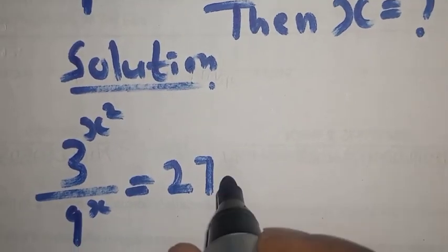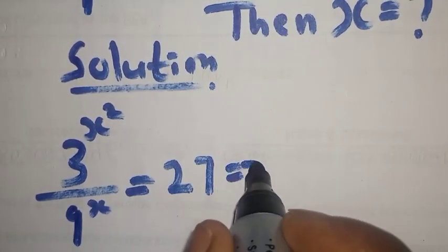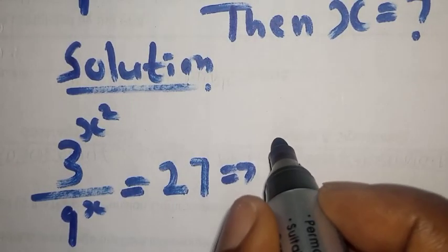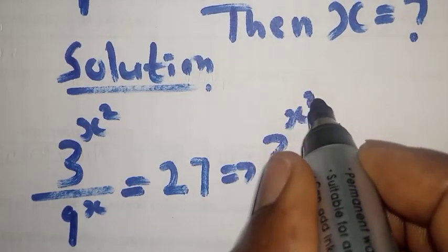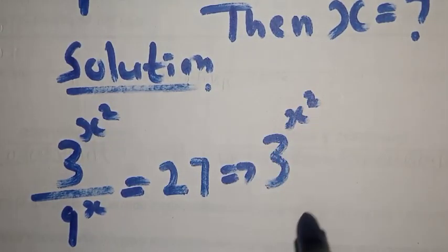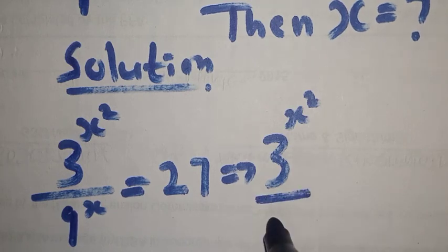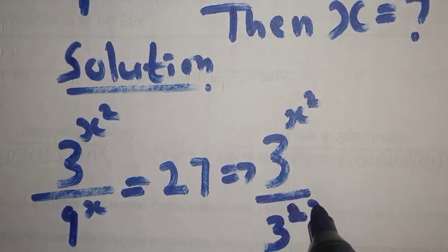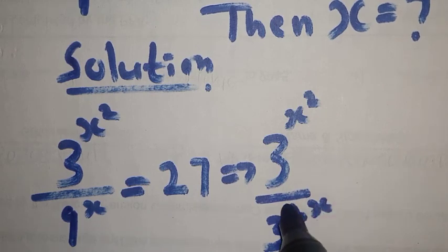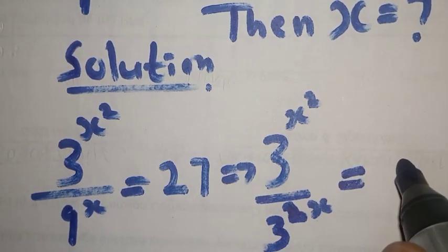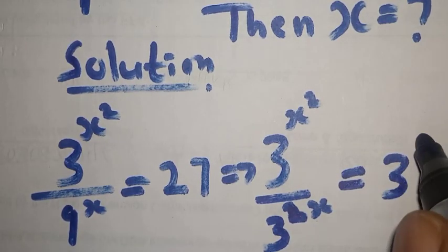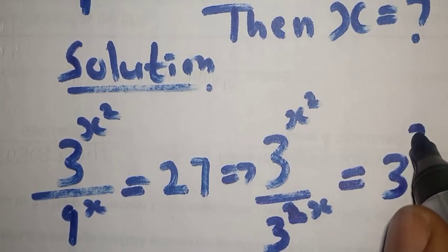This can be rewritten as 3 raised to power s squared over 3 raised to power 2s, because 9 is 3 squared, equal to 3 raised to power 3, since 27 is 3 raised to power 3.